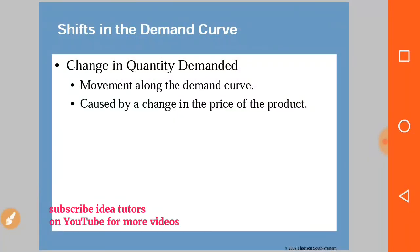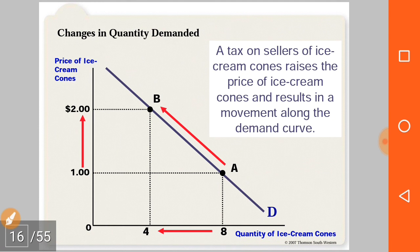Change in quantity demanded involves movement along the same demand curve. It is caused by a change in the price of the product while other factors are held constant, as in the law of demand. When only the price is changing, we observe movement along the same demand curve. For example, as price rises, there is an upward movement from point A to point B along the same demand curve, and quantity demanded decreases from 8 to 4.